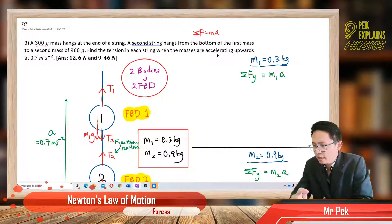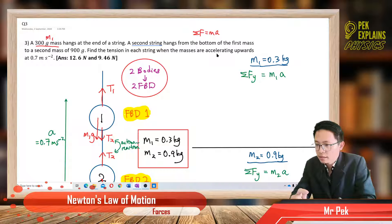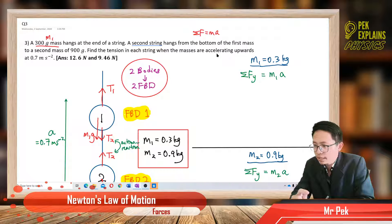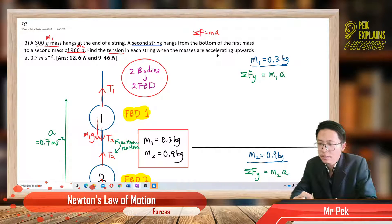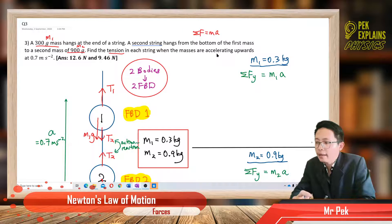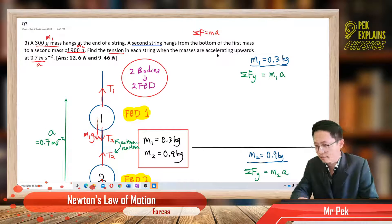The information given: we have mass one and mass two, the second mass. We are asked to find the tension, and the acceleration is already given.